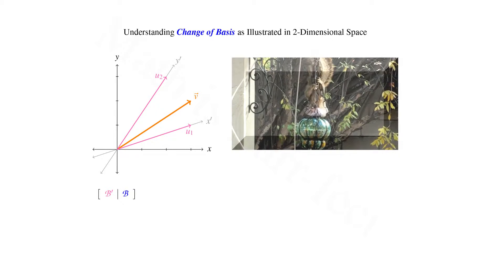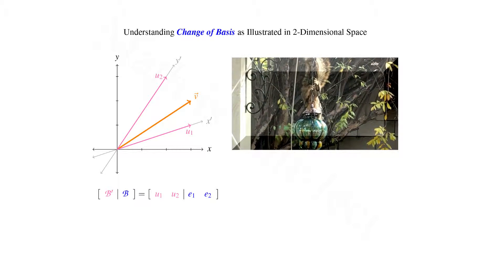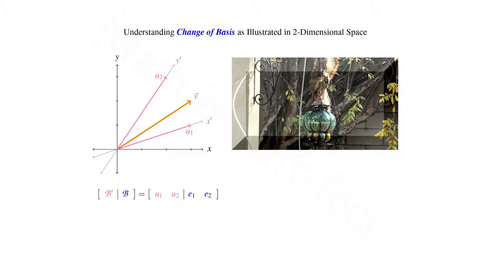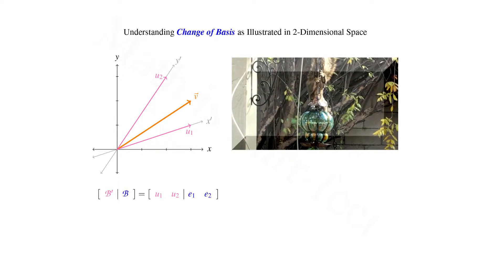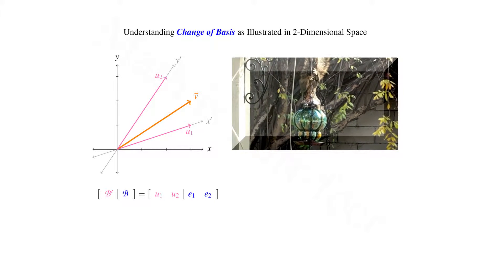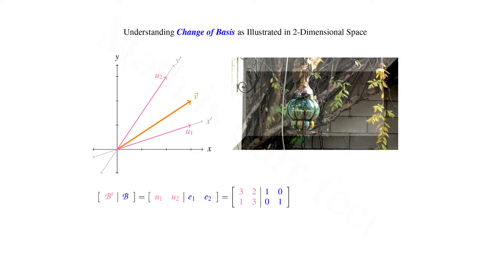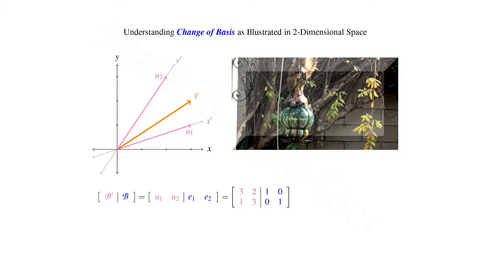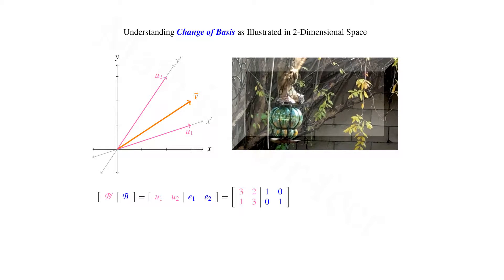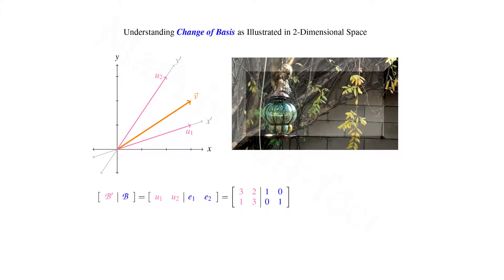In order to do this, we set up an augmented matrix, wherein the desired basis lies to the left of the augment, and the original basis to its right. For us, this yields 3,1 in the first column, and 2,3 in the second. Then after the augment, we have 1,0 and 0,1.